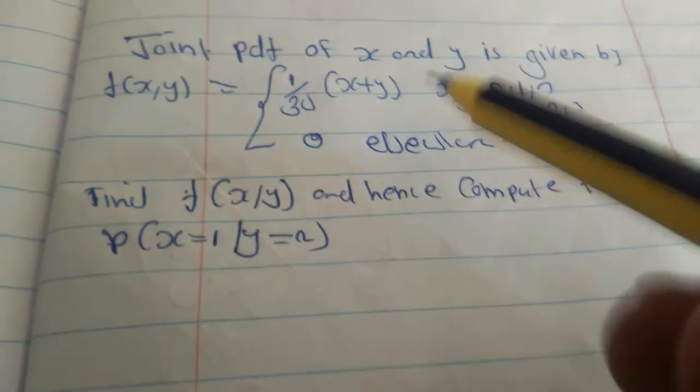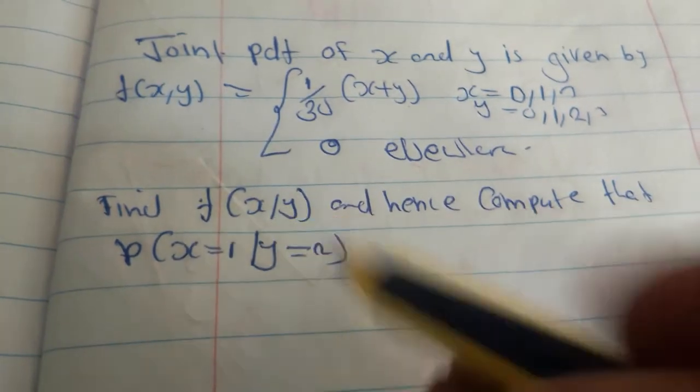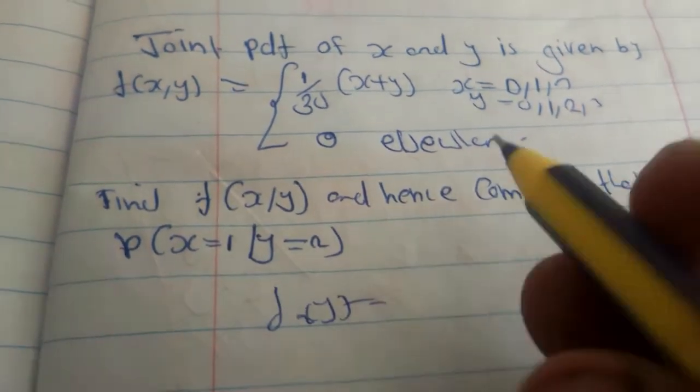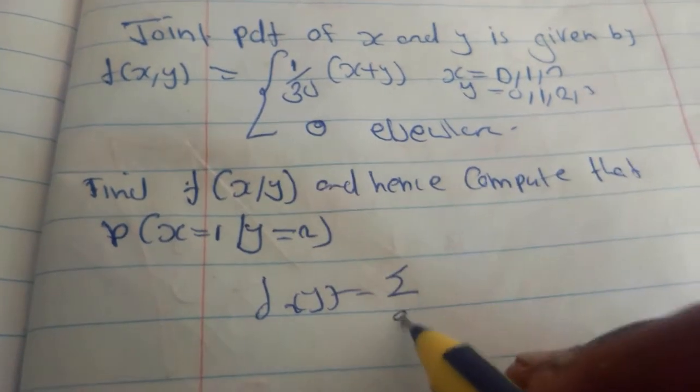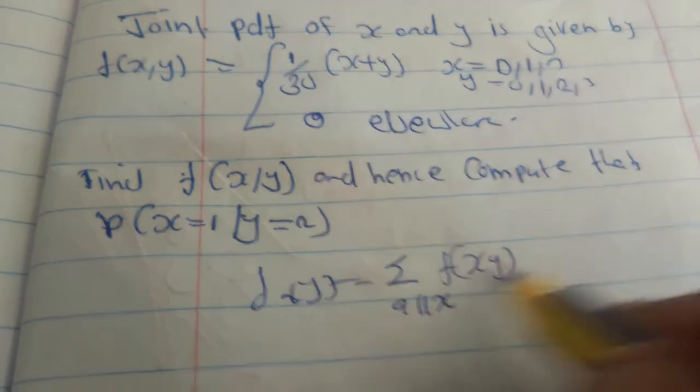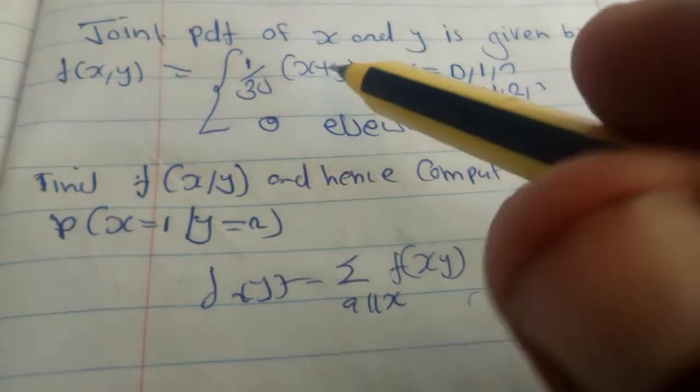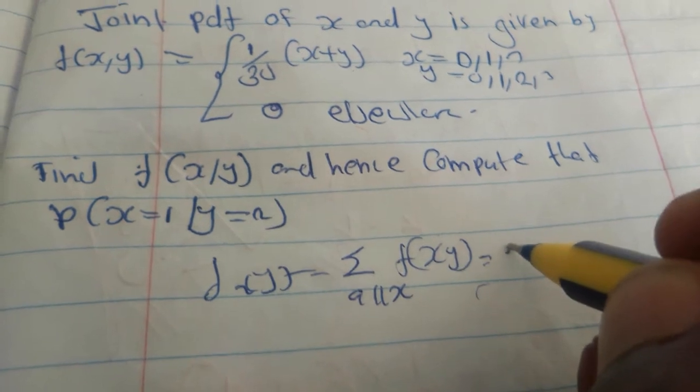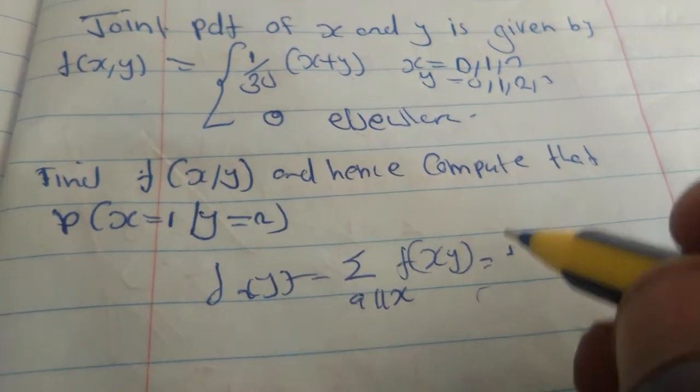So for this one, we are going to find the marginal function f2(y). This is given by summation over all x of f(x,y). That means for this one, we will have it equal to...